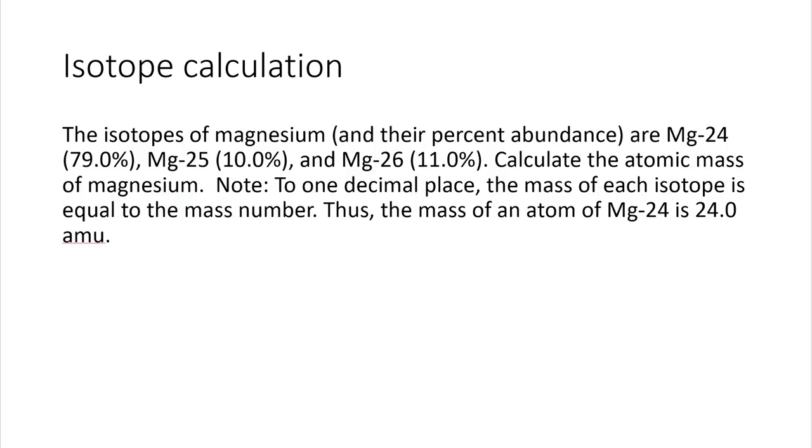Similarly, we can do this with real atoms, not just bean atoms. So we can calculate the average atomic mass of magnesium. So the average atomic mass of magnesium is the mass of the first one, magnesium-24 is 24.0 AMUs times 79%, which is 0.790.